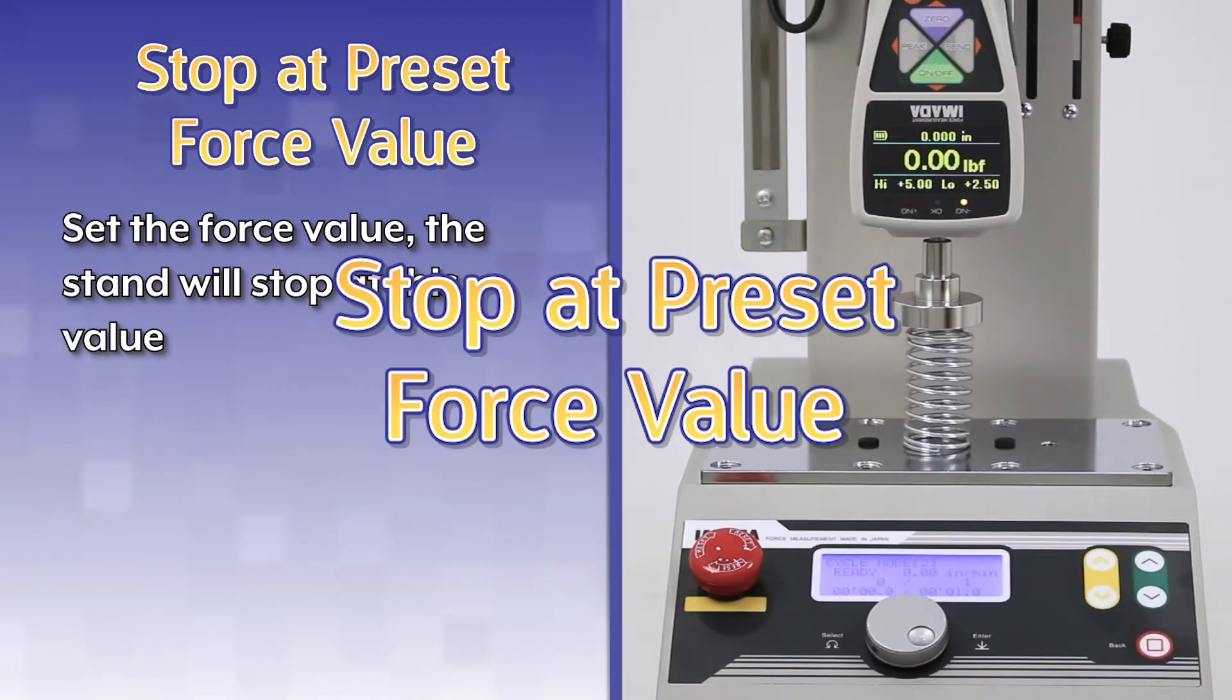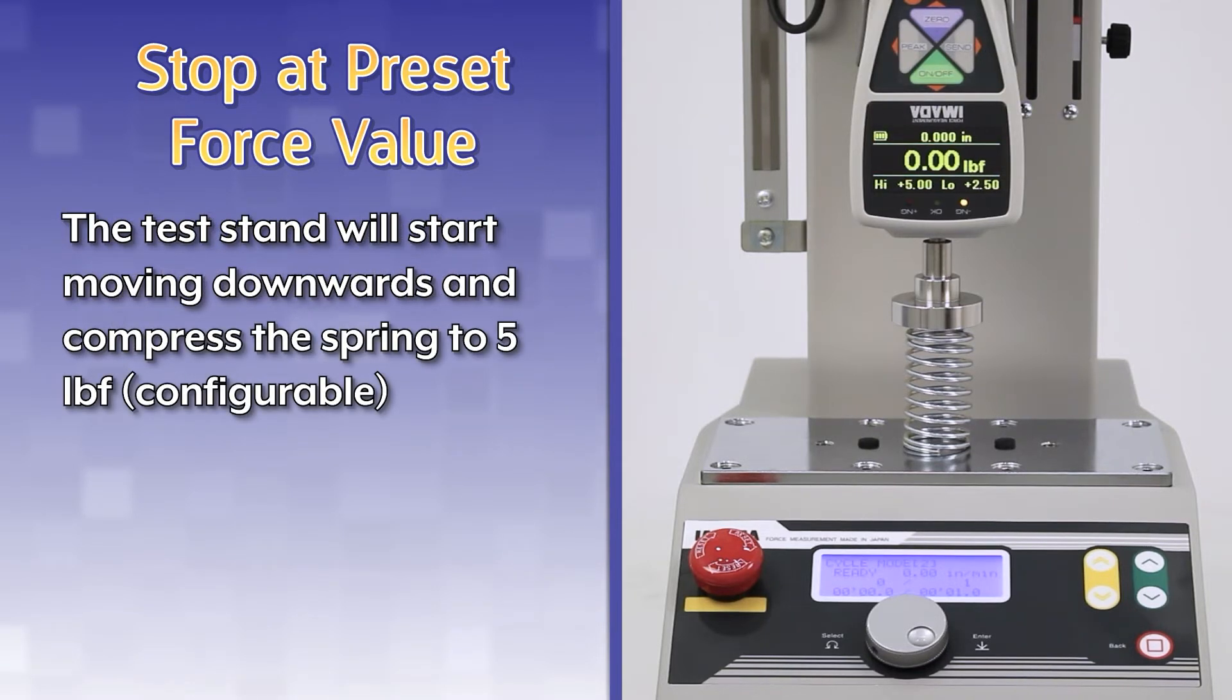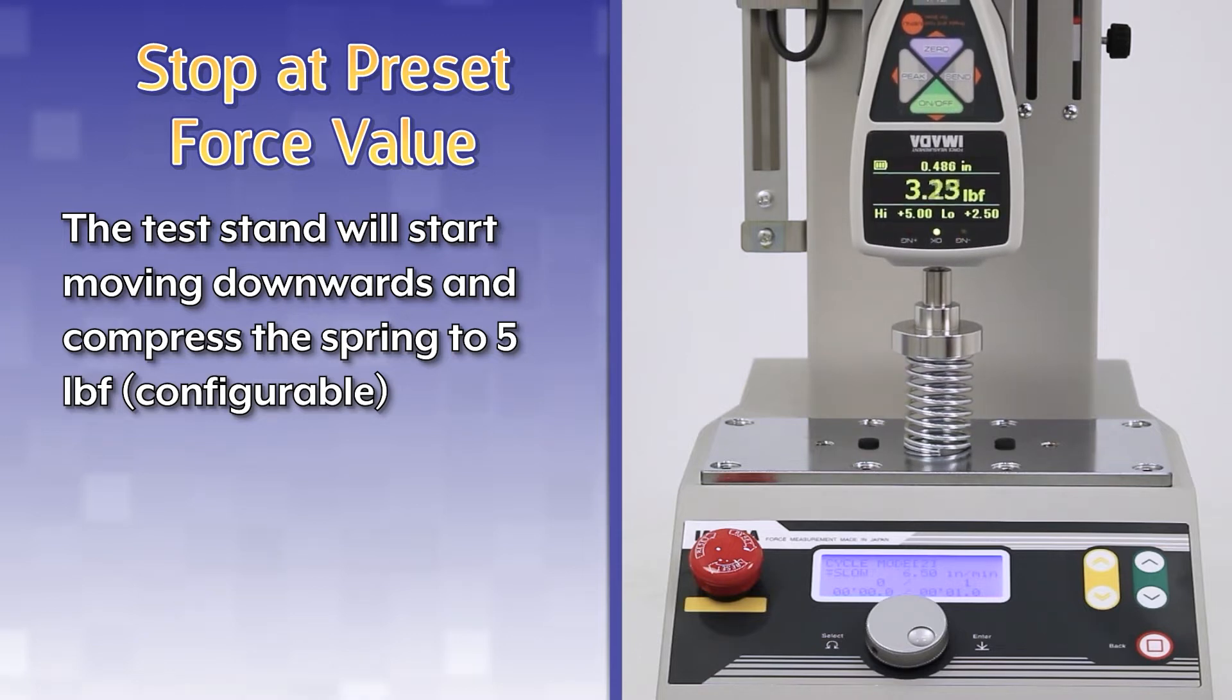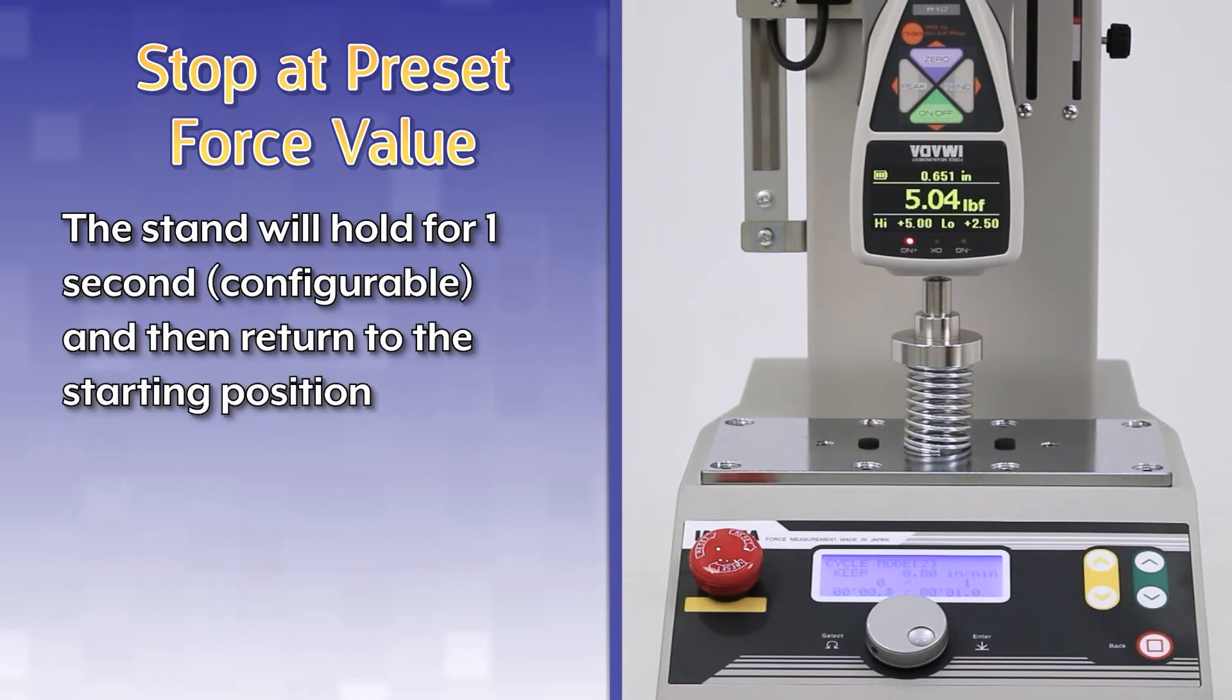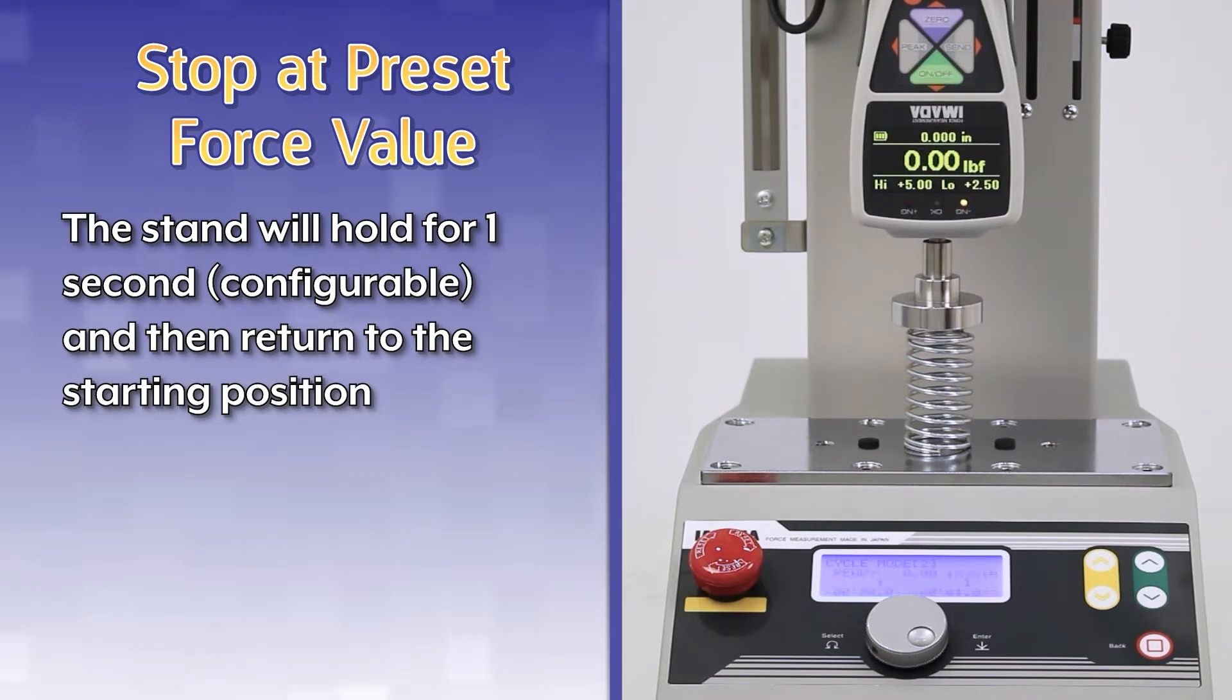Stop at preset force value. Set the force value. The stand will stop at this value. The test stand will start moving downwards and compress the spring to five pounds force, configurable. The stand will hold for one second, configurable, and then return to the starting position.